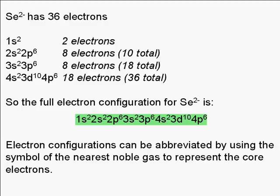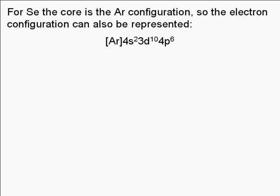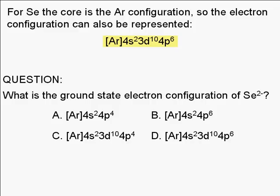Electron configurations can be abbreviated by using the symbol of the nearest noble gas to represent the core electrons. For selenium, the core is the argon configuration, so the electron configuration can also be represented as: argon core, 4s2, 3d10, 4p6. Note that this is also equivalent to the krypton core. So the correct answer to our question is choice D.